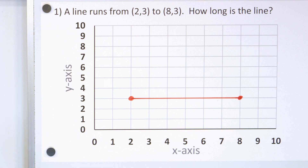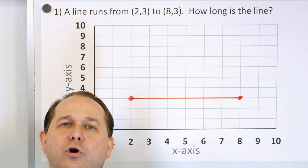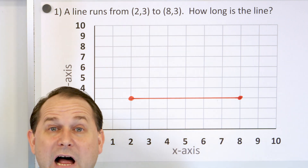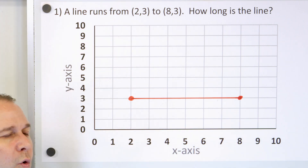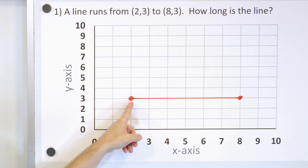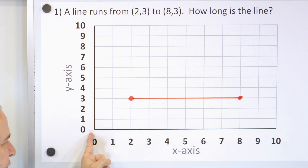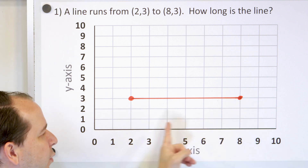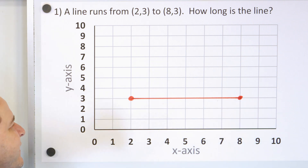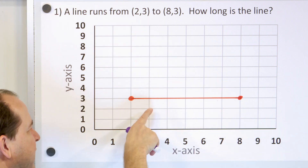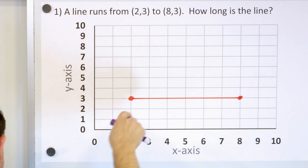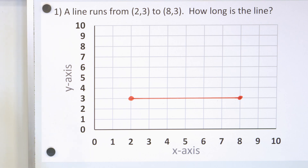So now we've drawn a line segment that starts at this point and terminates over here. The question isn't just asking us to graph the thing — the question is, how long is the line? You might think about this in terms of city blocks, or the X-axis being in feet or meters. So this is the end point at 2 meters, 3 meters from the origin. The other end point is 8 meters away and 3 meters up. Counting from the starting point: 1, 2, 3, 4, 5, 6. The line is 6 units long.